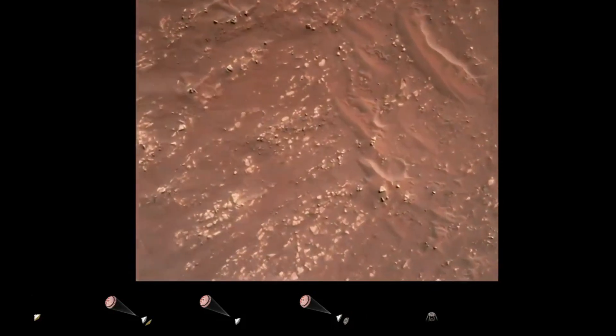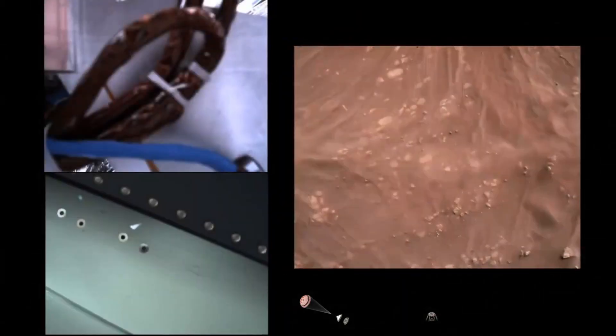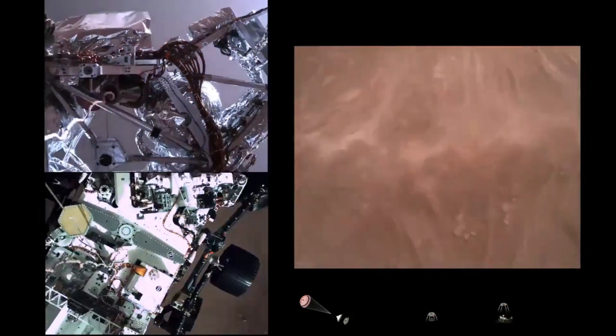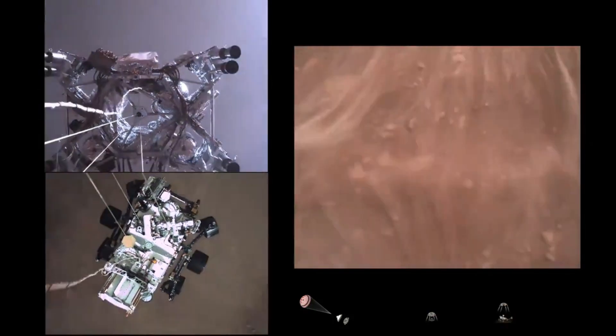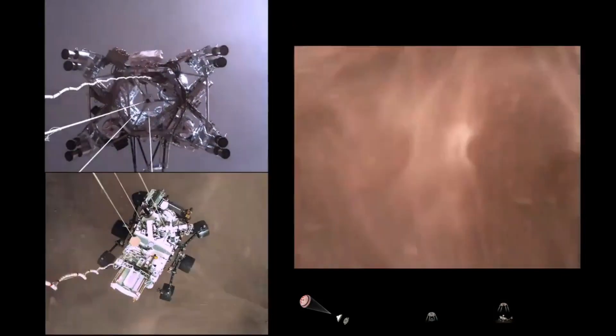We have started our constant velocity section, which means we are conducting the sky crane, about to conduct the sky crane maneuver. Sky crane maneuver has started. About 20 meters off the surface.